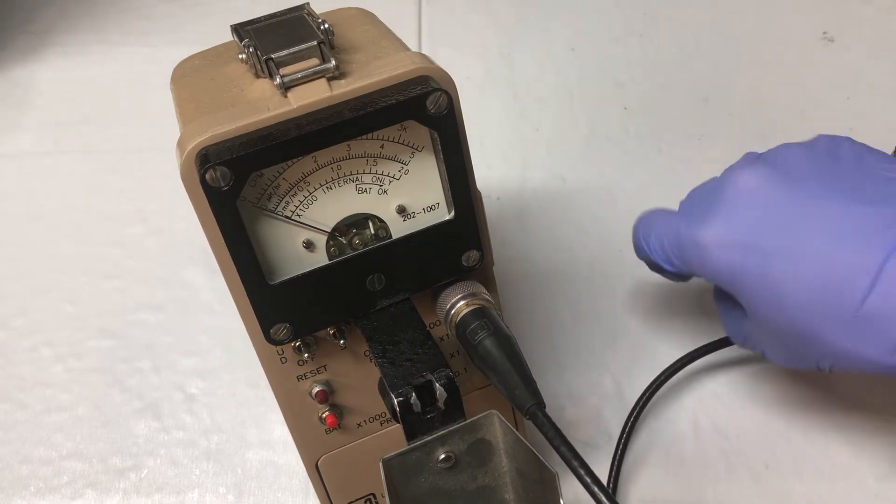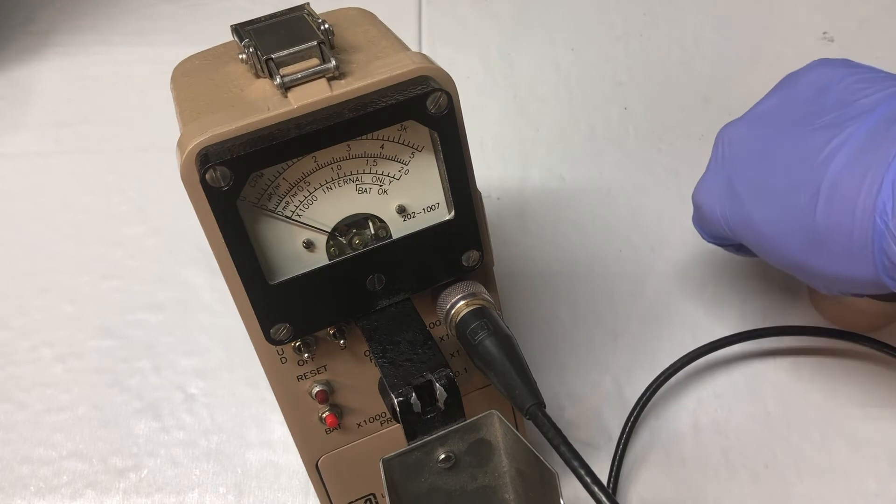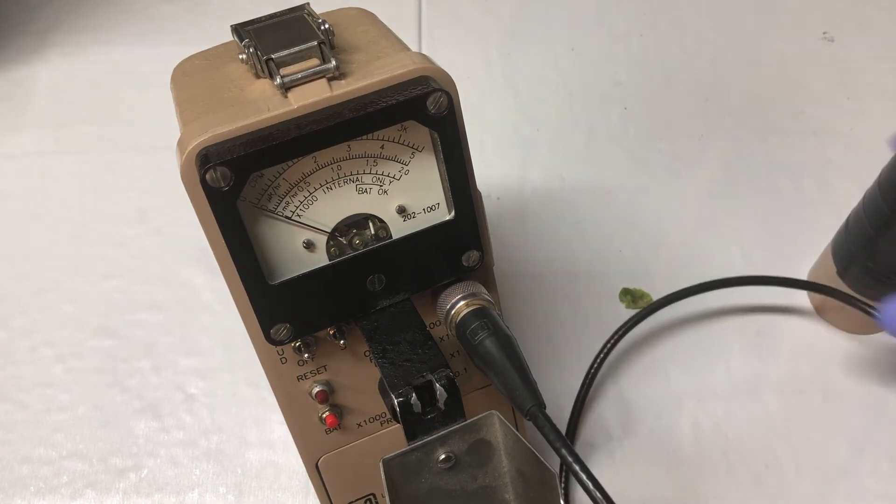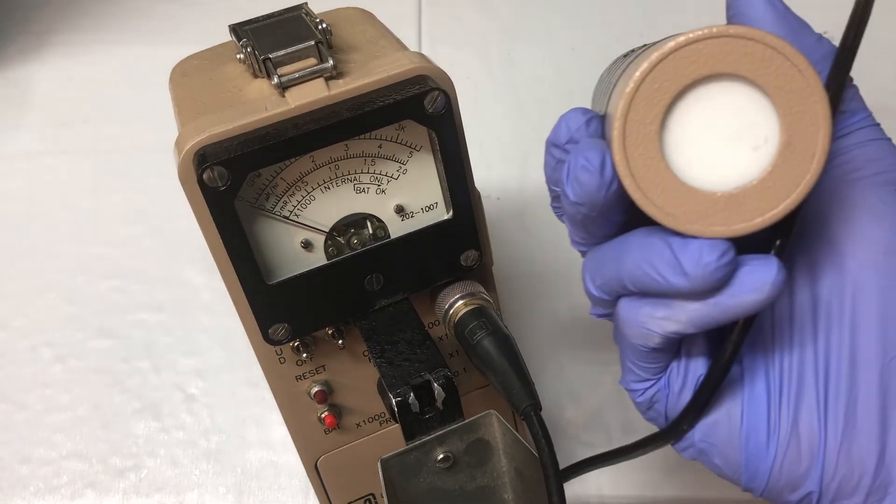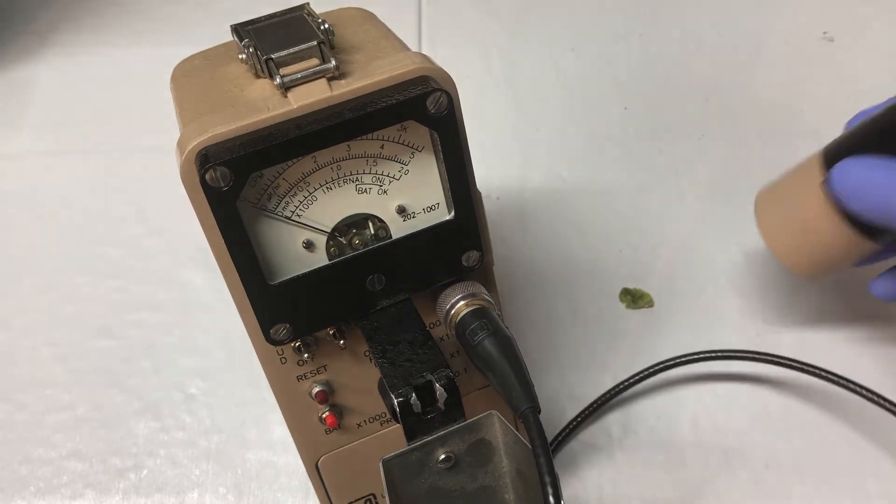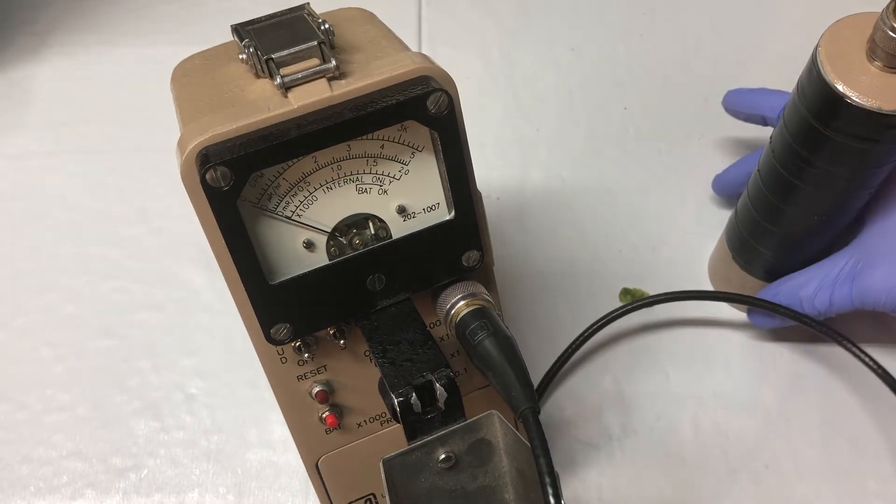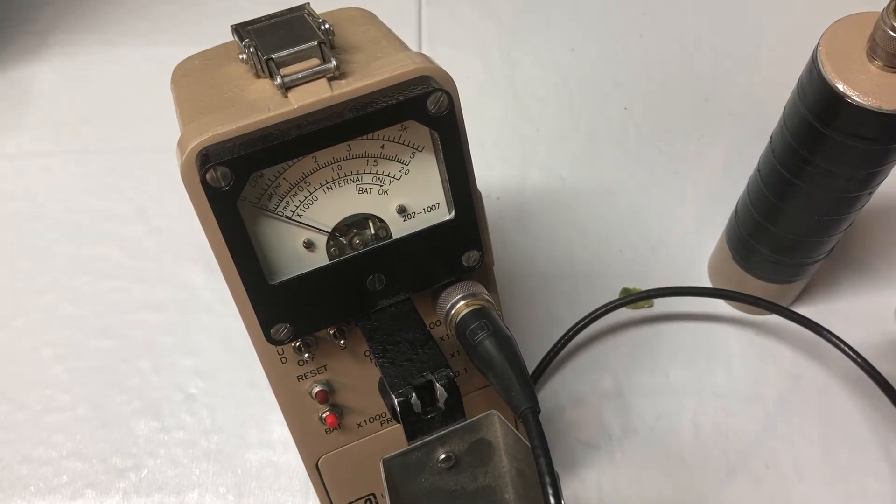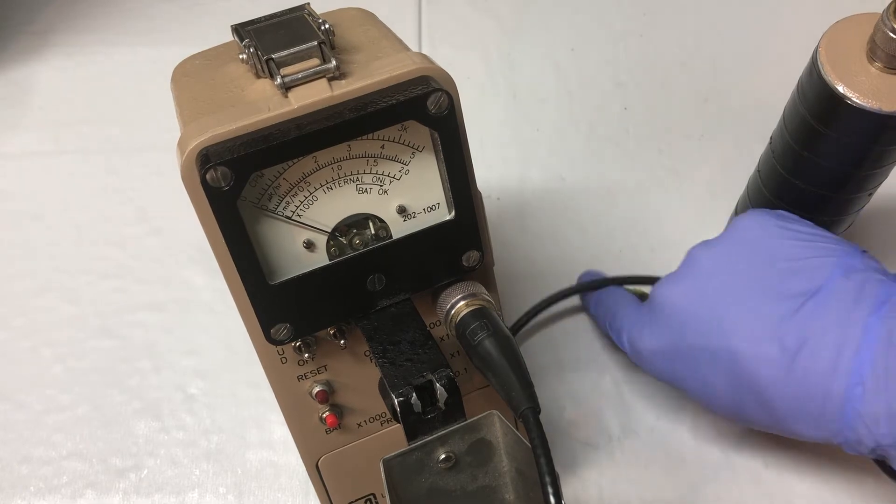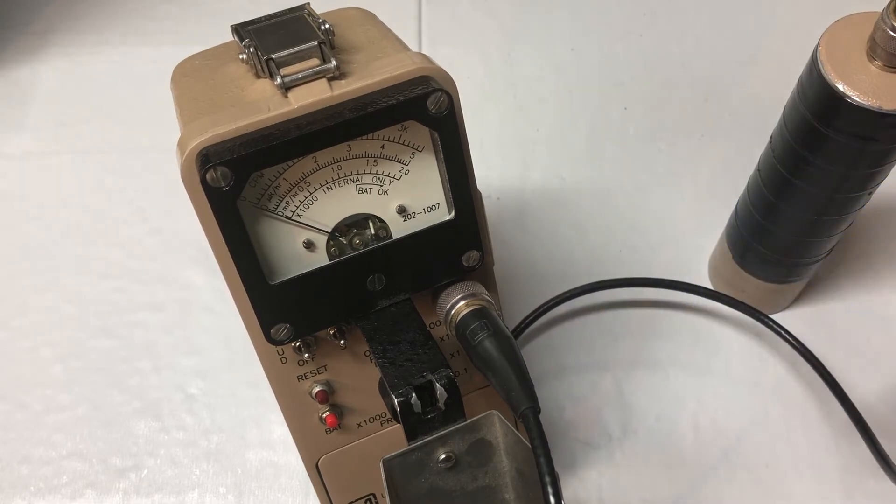It's very sensitive—even bringing it next to the side it starts to climb, even though it's not in front of the detector part. The gamma radiation penetrates through the sides of the detector. Let's put this back and get another sample.